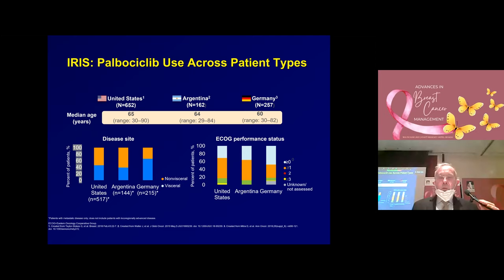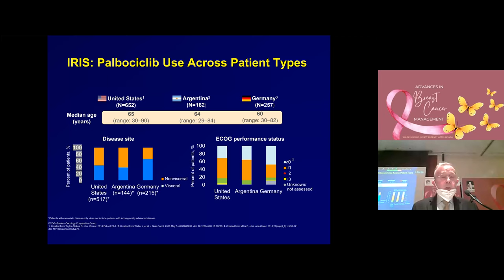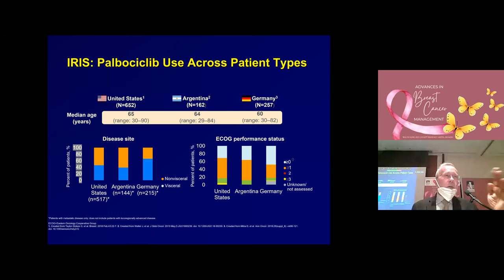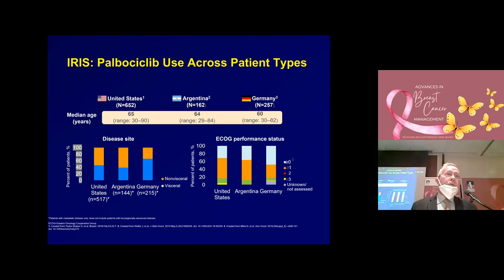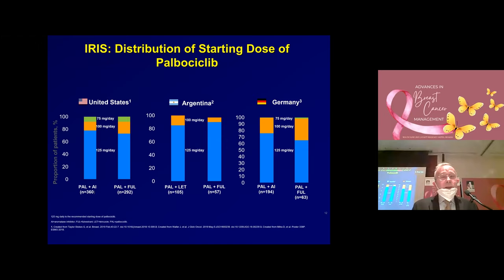When you look at the use across different countries, it's very interesting to see the differences. Looking at disease site — visceral disease such as liver versus non-visceral disease — patterns are different. In Argentina, for instance, significantly less use in visceral disease, mostly in good prognosis patients with bone-only or non-visceral disease. In Germany, at the opposite, people are using CDK4/6 inhibitors more in ladies with visceral metastases. When you look at ECOG status, the same thing: in Germany, the majority of patients have good ECOG status initially. In the US, they treated many patients even with not very good ECOG status.